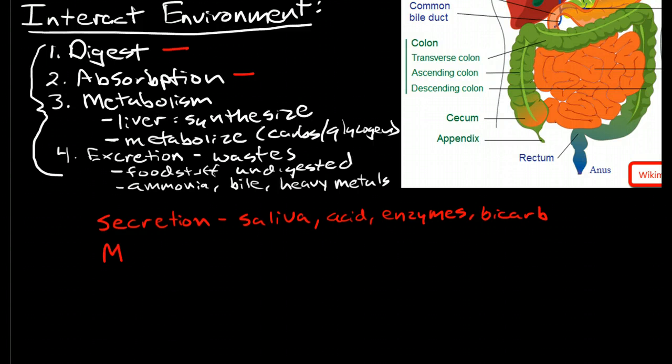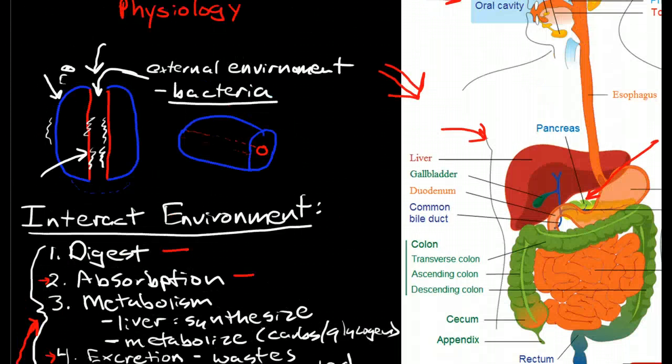And then there's motility that also aids in absorption by bringing things close to the absorptive surfaces of the GI tract and excretion. So, secretion and motility are important functions, but they are here to support the main functions that help the organism survive.